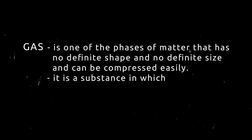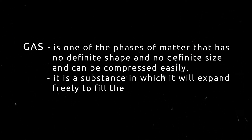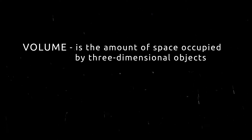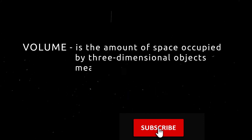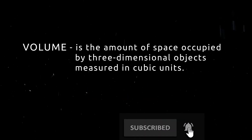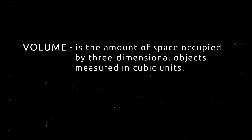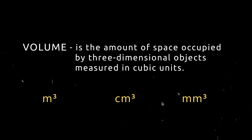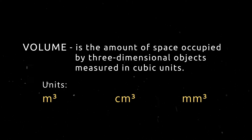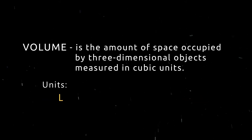Gas is a substance that will expand freely to fill the whole container. Volume is the amount of space occupied by three-dimensional objects. In our case, these objects are gas particles measured in cubic units. Whenever you see units such as cubic meters, cubic centimeters, or cubic millimeters, these are all units of volume. However, there are other units of volume that do not have cubic units — these are liters or milliliters.